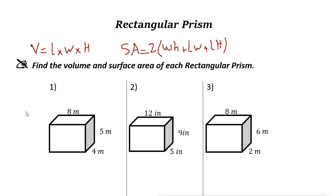Let's find the volume and surface area of each rectangular prism here, the shapes that we have.